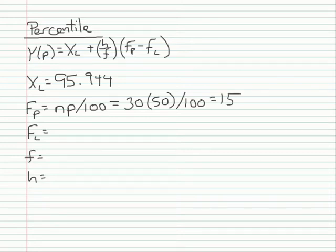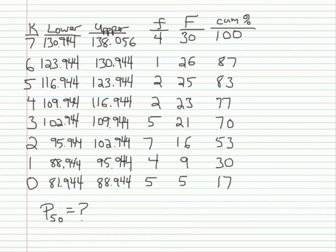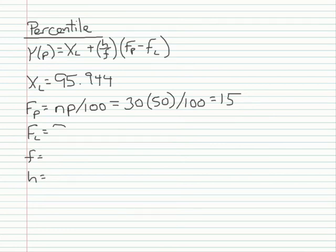Next, I need to find f sub l, which is the frequency of scores below x sub l. To find f sub l, I need to go to the interval that contains my percentile point, which again, remember that was the third interval. I need the frequency of scores below this interval, so that's going to be 9. So f sub l is going to be 9.